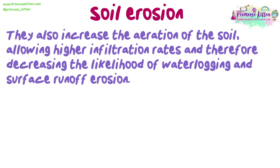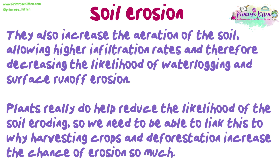Roots also increase the aeration of the soil, allowing higher infiltration rates, and therefore decreasing the likelihood of waterlogging and surface runoff erosion. Plants really do help reduce the likelihood of the soil eroding, so we need to be able to link this to why harvesting crops and deforestation increase the chance of erosion so much.